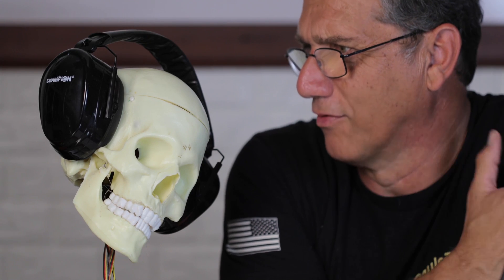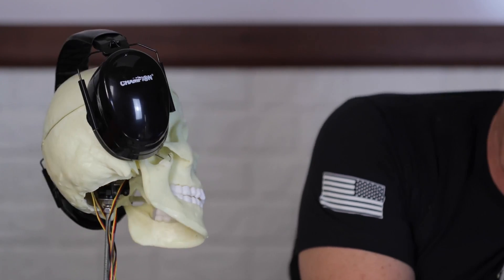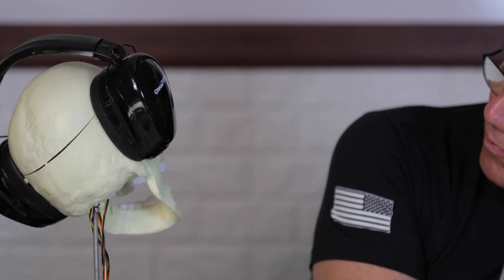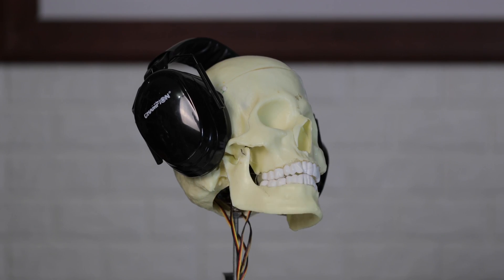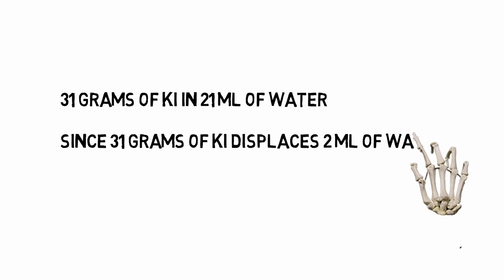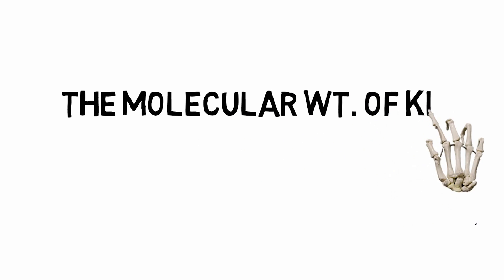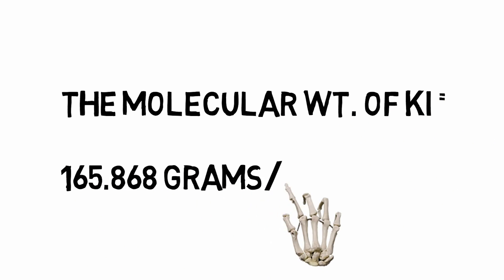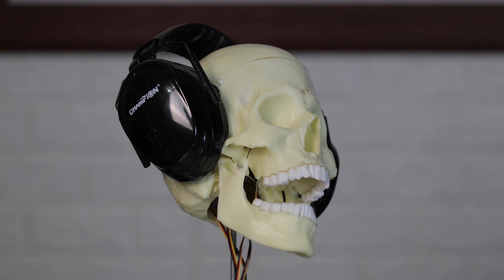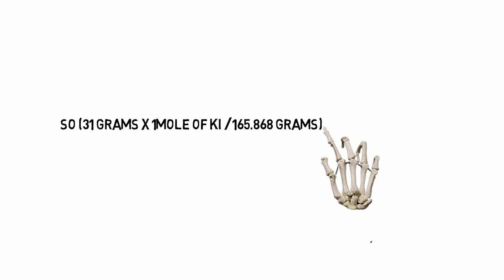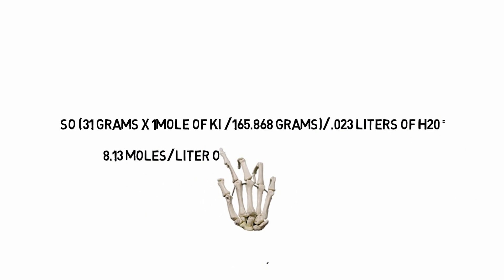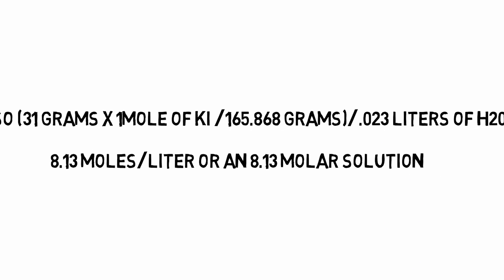Now how could you possibly know that off the top of your skull? Past research suggests a saturated solution to be 31 grams of potassium iodide in 21 milliliters. So add 31 grams of potassium iodide to 21 milliliters. Since 31 grams displaces approximately 2 milliliters, we have 23 milliliters total. The molecular weight of potassium iodide is 165.868 grams per mole. So 31 grams times 1 mole per 165.868 grams divided by 0.023 liters equals 8.13 moles per liter, or 8.13 molar.